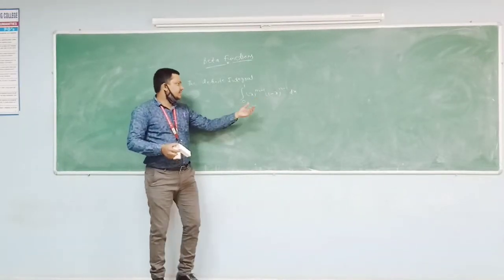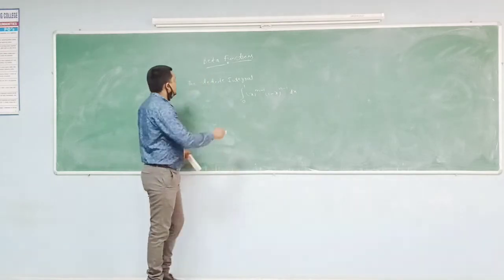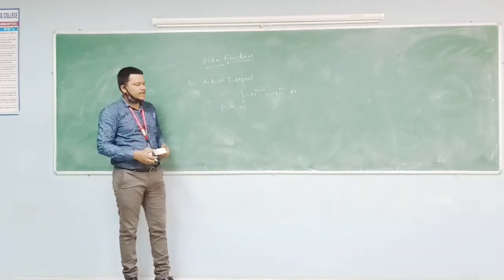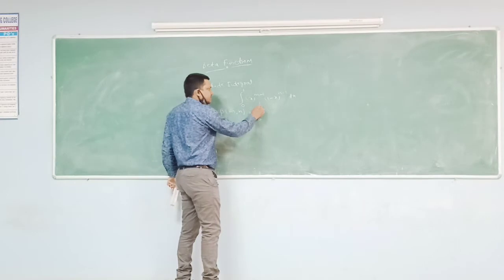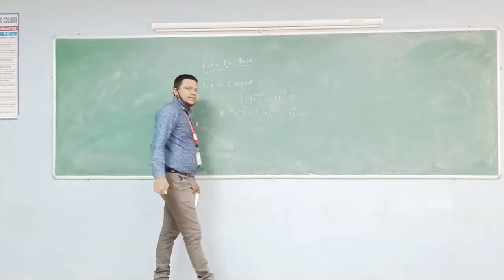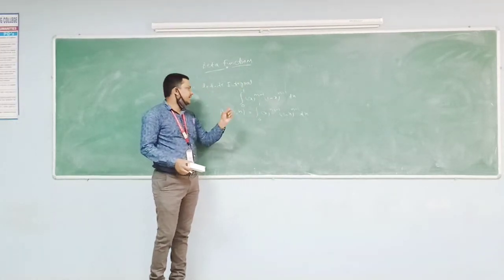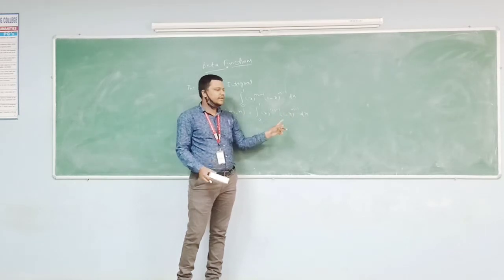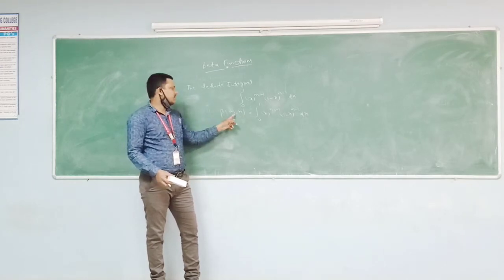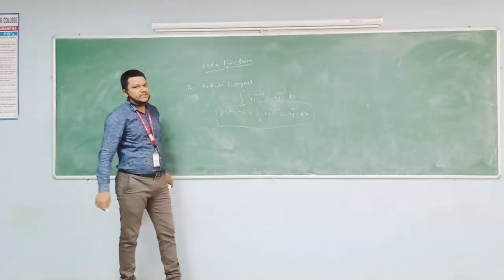This function is expressed in terms of m and n. Therefore, the beta function is denoted as beta of m comma n, which equals the integral from 0 to 1 of x power m minus 1 into 1 minus x whole power n minus 1 dx. This is the definition of the special type of function known as the beta function.